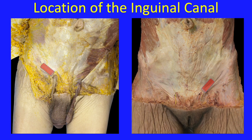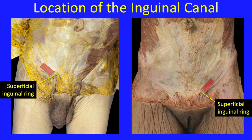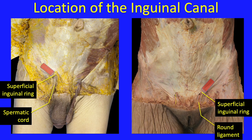Let me now demonstrate the location of the inguinal canal in the male on the left panel and the female on the right panel, as an introduction to the subject matter to follow. The cylinders represent the location of the inguinal canals, and they reside deep to the aponeuroses discussed in the previous lecture. The termination of the inguinal canals are the superficial inguinal rings. In the male, it is the spermatic cord that exits the ring, whereas in the female it is the round ligament of the uterus.